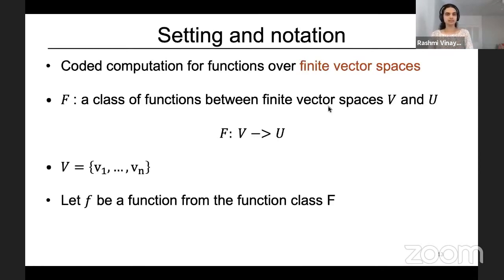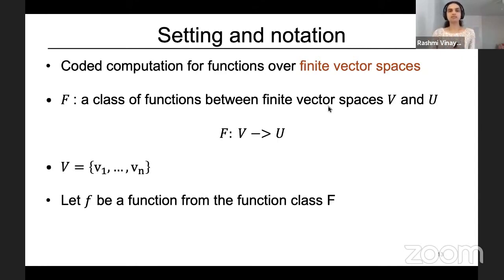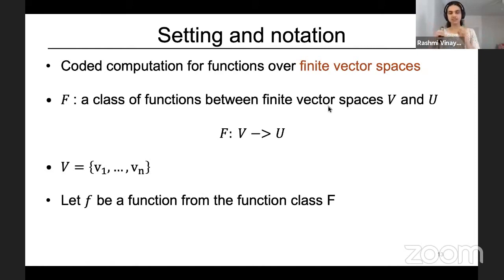In chasing this question, we propose a new approach to model coded computation via the lens of locality of codes. A quick slide on setting and notation: for simplicity, I'll be focusing on coded computation for functions over finite vector spaces. Let capital F denote a class of functions between finite vector spaces V and U. Let V consist of points V1 to Vn, and let small f be the function of interest from this class.